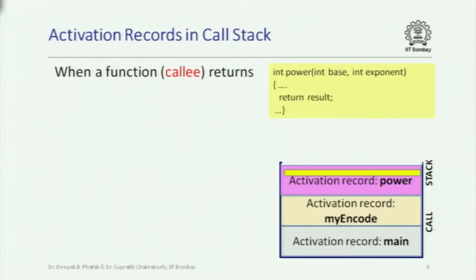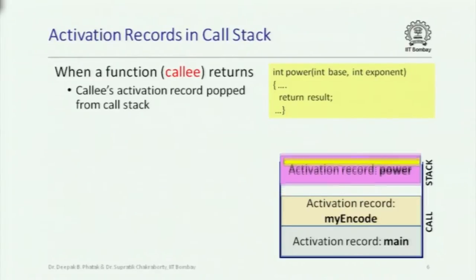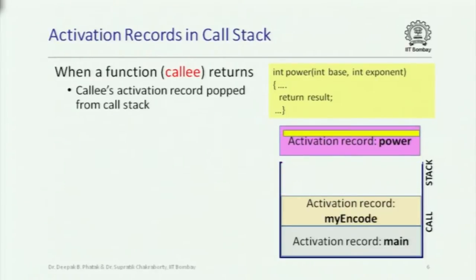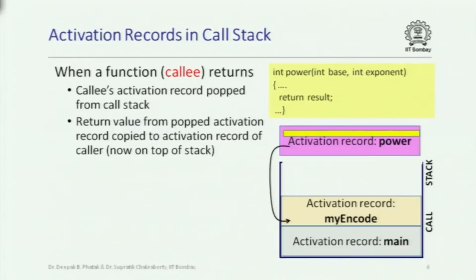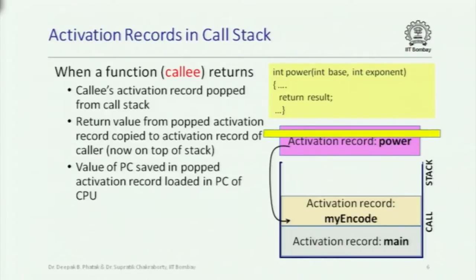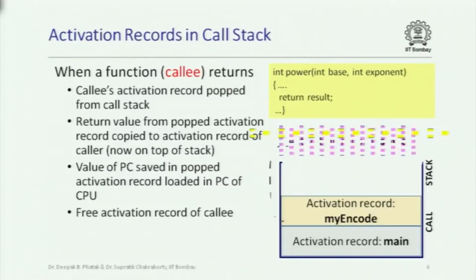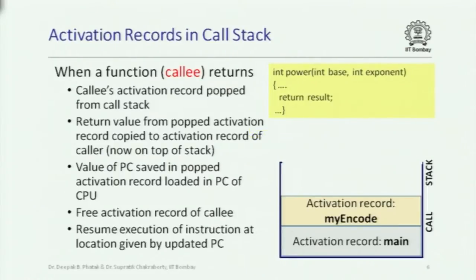Similarly, when the function power returns, its activation record is popped out. You copy the result — whatever you are returning — from the activation record of the called function to the activation record of the calling function. Then, the value of the PC that was saved tells you where to resume execution in the calling function. You free the activation record of the callee and then resume instruction at whatever value of PC was saved.